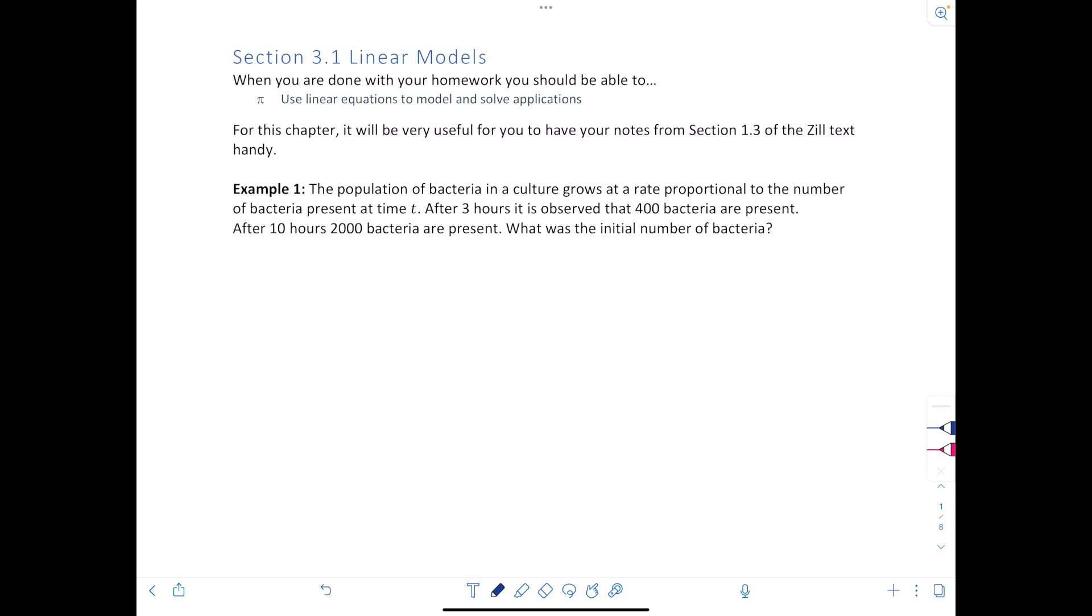The first example deals with population of bacteria in a culture growing at a rate proportional to the number of bacteria present at time t. After 3 hours it is observed that 400 bacteria are present. After 10 hours, 2000 bacteria are present. What was the initial number of bacteria? We've done some problems like this before, but you were already given the exponential function that modeled this.